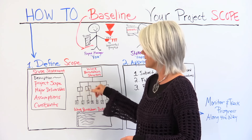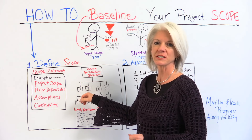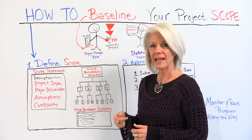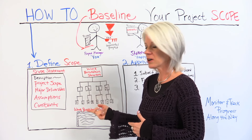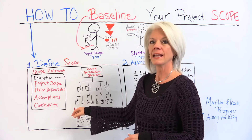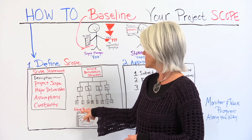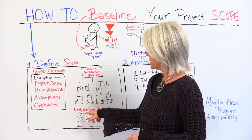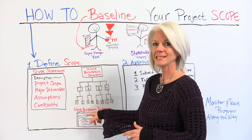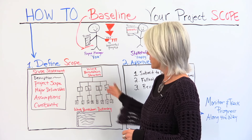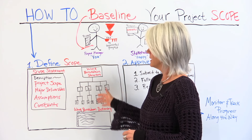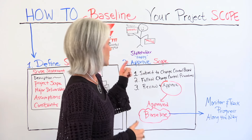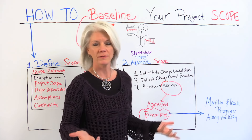Those detailed work packages are what we use to build the schedule and estimate the cost. We also use the work breakdown structure dictionary, which is a more detailed description of each of those work packages. So we define the scope and then we approve it.